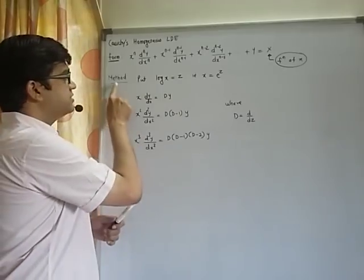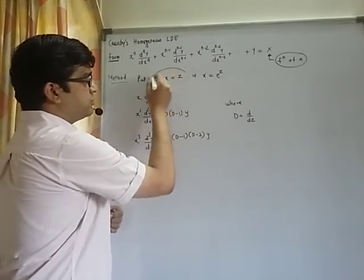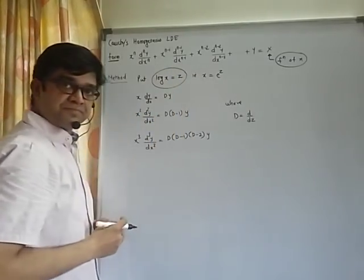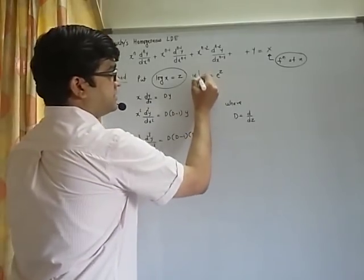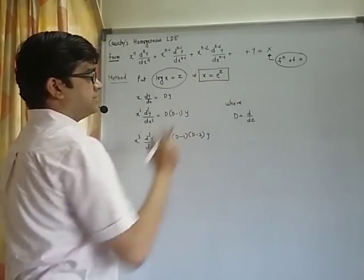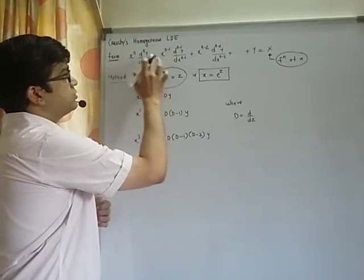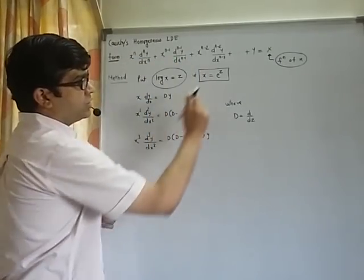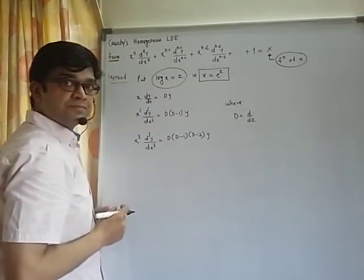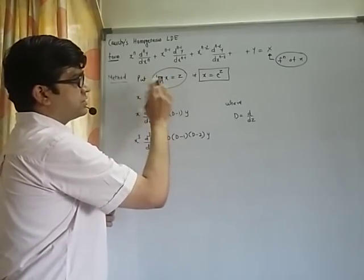The second most important thing is method. We have to put log x equal to z such that x equals e raised to z. Wherever you see x, you will write e raised to z and wherever you see log x, you write z.